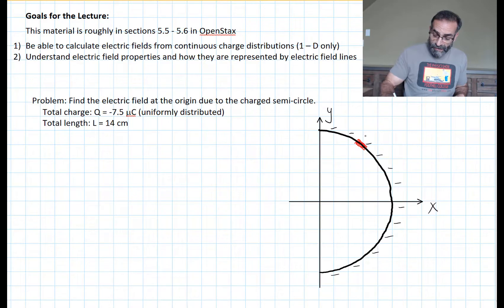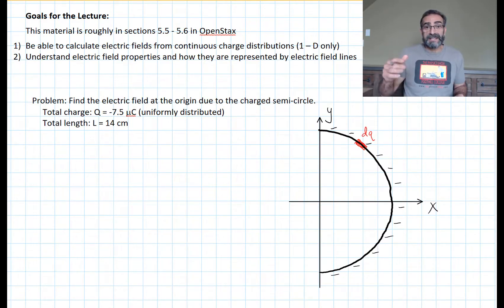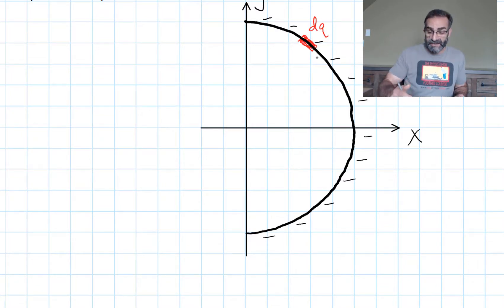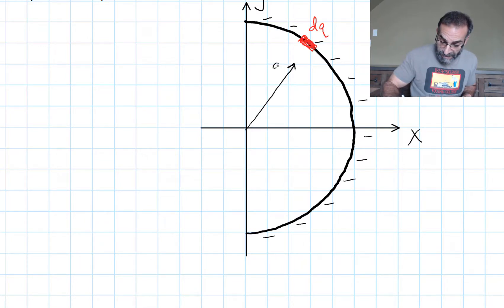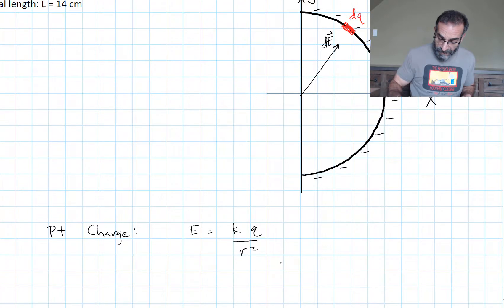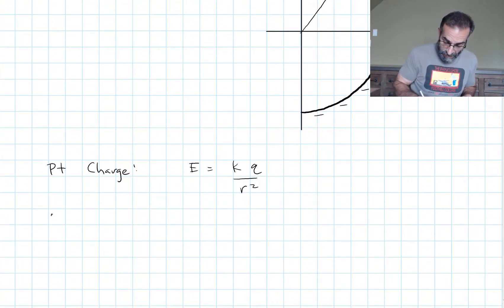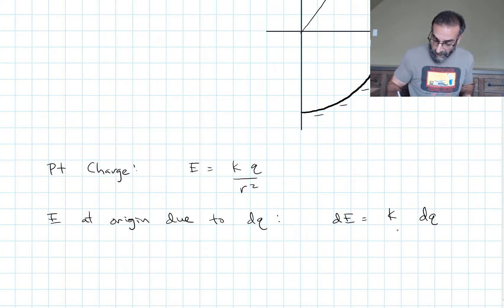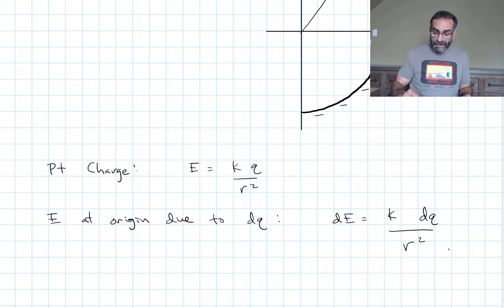That dq is so small we can treat it like a point charge. Because the charge is negative, the electric field will point toward dq, and we'll call that dE. The electric field produced by a point charge is kq/r², so the electric field at the origin due to dq is k times dq over r squared. We want to add up all the contributions from every little dq along our line of charge.